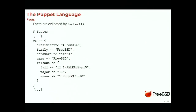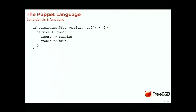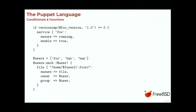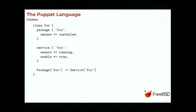We can do better than that. We can use functions and conditionals to conditionally include parts of the manifest — for example, managing a service only if a certain condition is met. We can use arrays to factorize code and avoid repeating ourselves. We also have the concept of classes. Often when you want to manage a service, you want to install a package, change configuration files, and start the service — you always want to do all three.